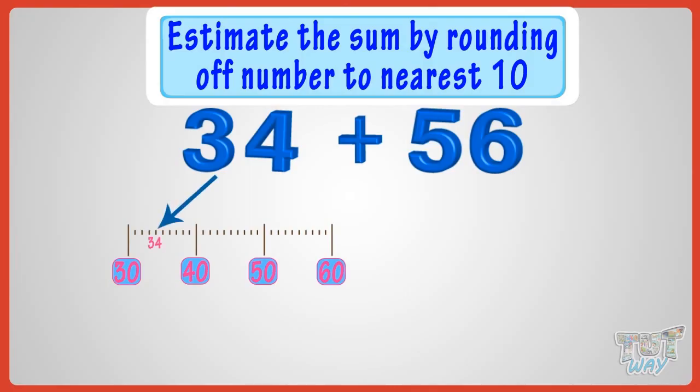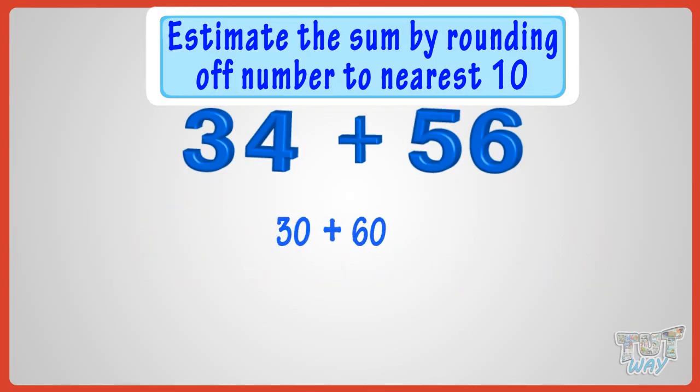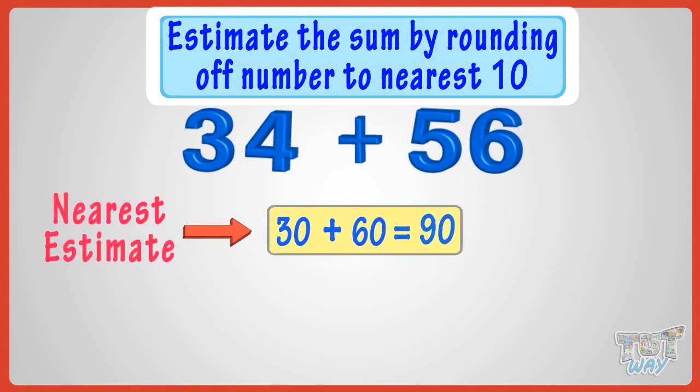Rounding off 34 to the nearest 10. We will get 60, as 56 is above the 5 mark. Now, add the rounded off figures to calculate the estimate. 30 plus 60 gives us 90. So, the nearest estimate of 34 plus 56 is 90.